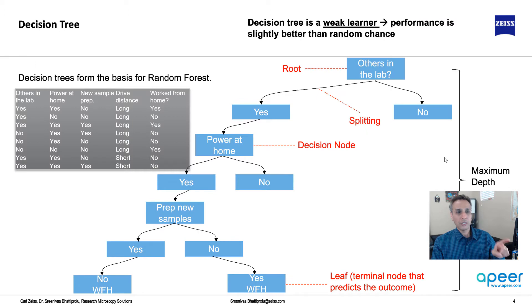Let's look at a decision tree. Decision tree is easy to understand. You want to work from lab because you're tired of working from home. The questions are: is there someone else in the lab? Is there power at home? Do I really need to prepare new samples or can I work with image processing? This is our decision tree. It's a weak learner, which means its performance is slightly better than random chance, but it's not superior.